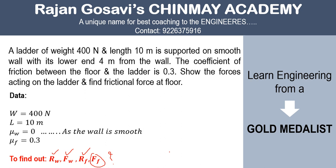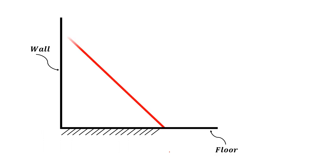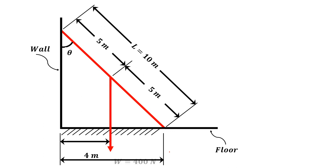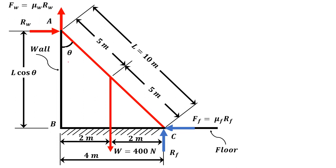Let us first see the arrangement of the ladder. This is the vertical wall and the horizontal floor. The ladder rests against the wall with length 10 meter; its center acts at a distance of 5 meter. The horizontal distance of the ladder's lower end is 4 meter from the wall. The angle made by the ladder with the vertical is theta, so the adjacent component is L cos theta.